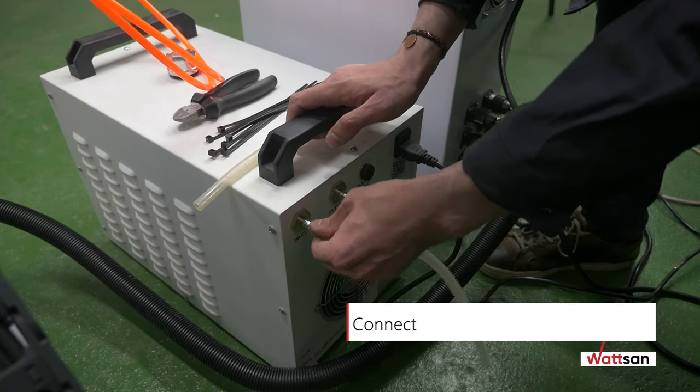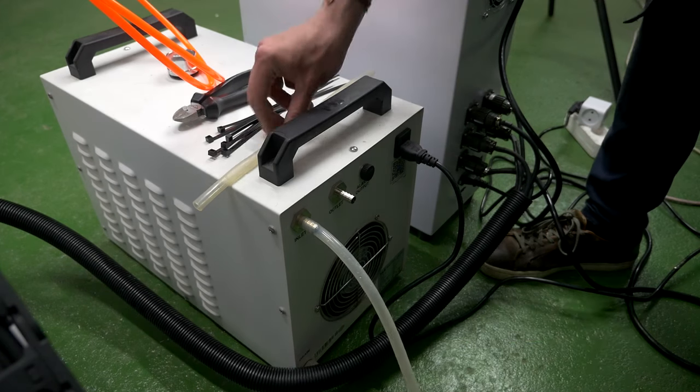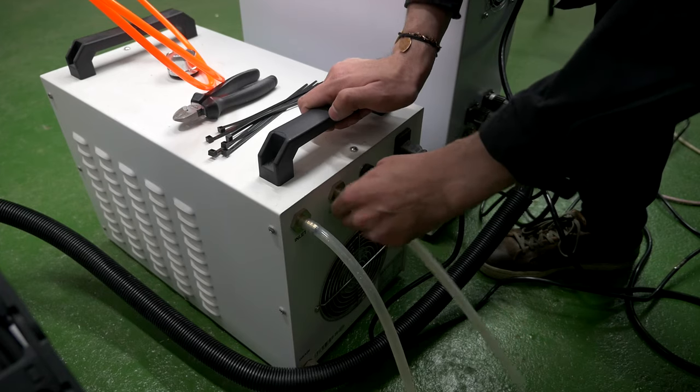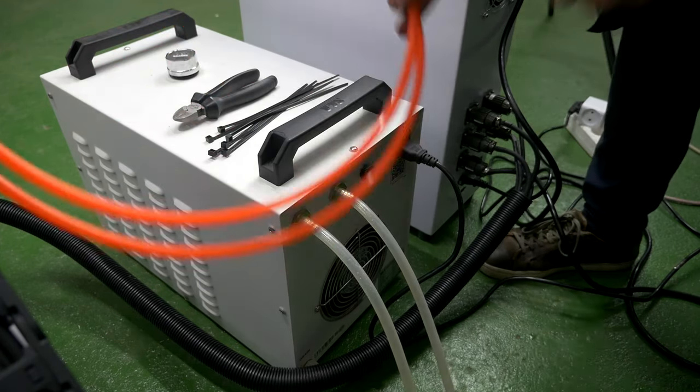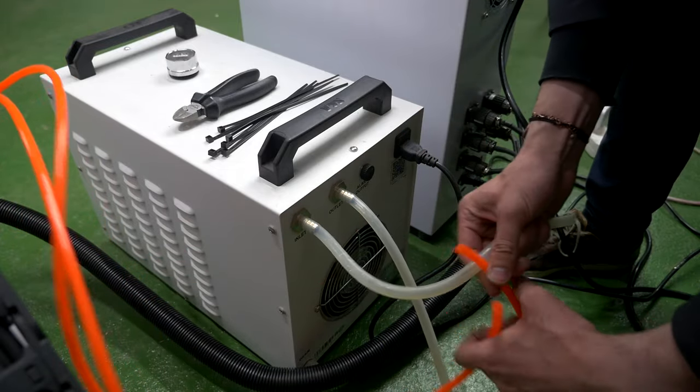Connecting the spindle cooling system. Take two short silicon hoses. Connect the hoses to the barb fittings of the chiller. Take the cooling pipes of the chiller and put them into the silicon hoses. Use plastic hose clamps to tighten all connections between the chiller pipes and silicon hoses.